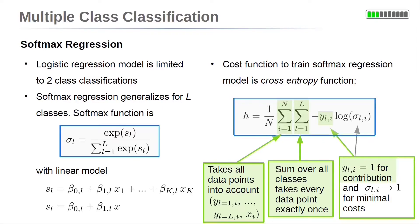The sum over all classes ensures that the data point is taken into account exactly once. Only if the data point's true value for the lth class is 1, it gives a contribution to the cost function. For the class of the data point, the model's output σ_l needs to be 1 to minimize the contribution. The contribution is large if model and true data point value differ.